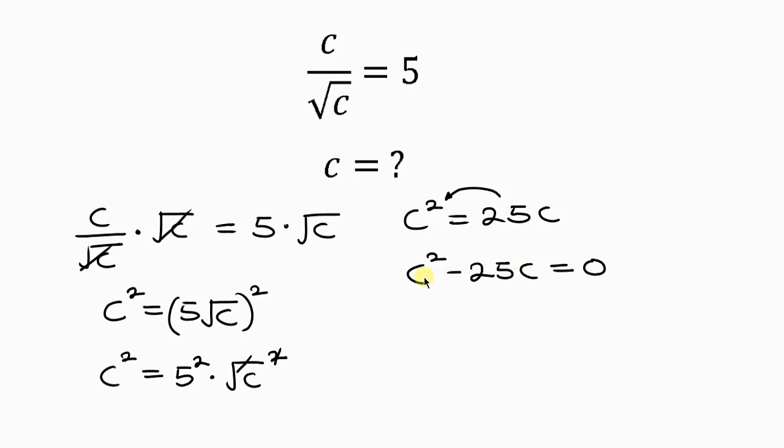Now notice that on the left-hand side, we have C common. So we have to factor out C. So factor out C, open brackets. C squared divided by C is C, minus 25C divided by C is 25. Close your brackets, equal to 0.